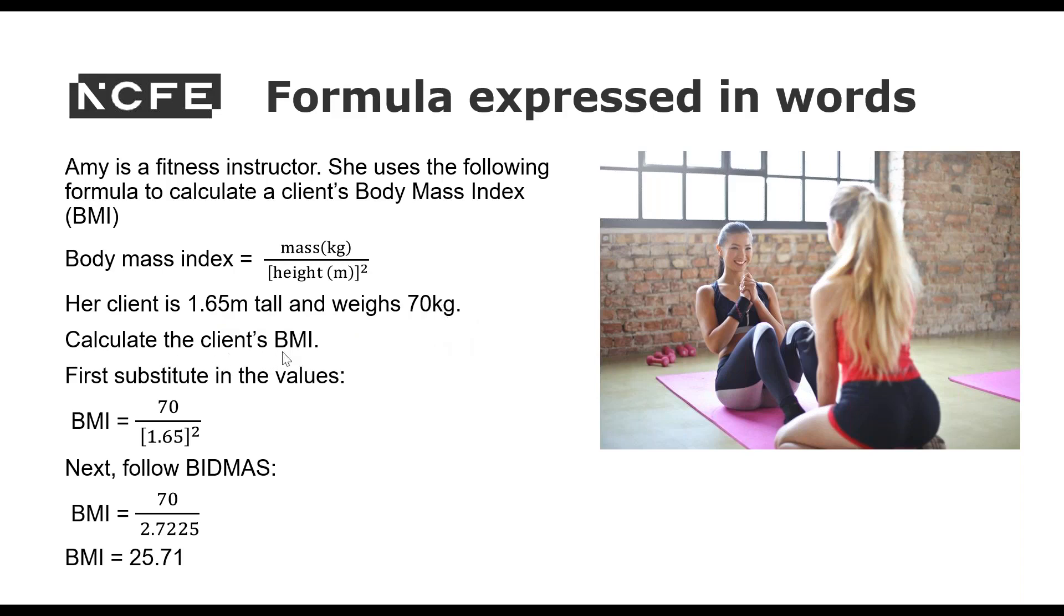We need to calculate the client's BMI. So first we substitute in the values. So 70 divided by 1.65 squared. So there's the first part. And then we follow BIDMAS. So we do 70 divided by, we're doing the indices first. We have put a bracket around this, but it's to the power of 2. So it's squared. So we do 70 divided by 2.7225 and that is 25.71.